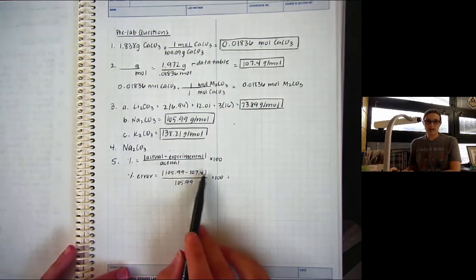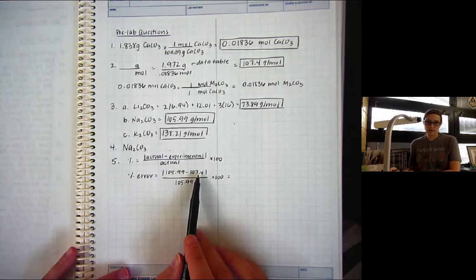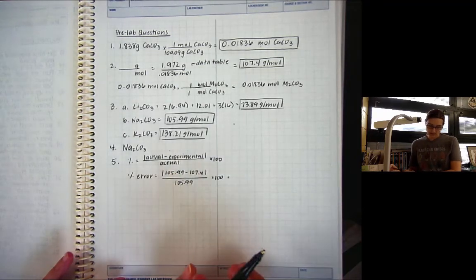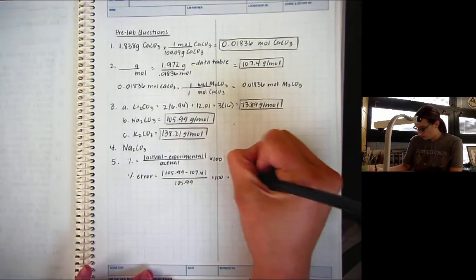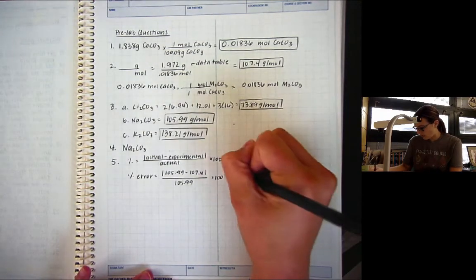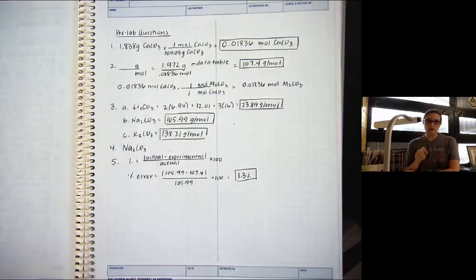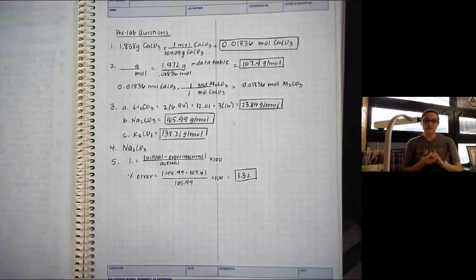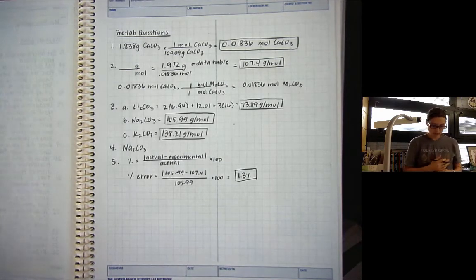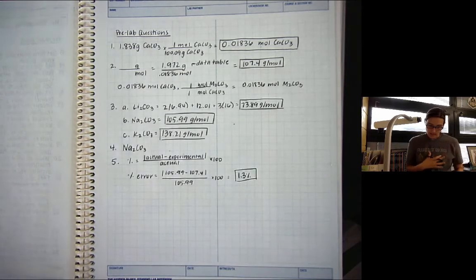So, when you subtract these first, just make it positive. Divide by 105.99 and then multiply by 100. You should get a 1.3 percent error. And make sure you're doing that in your calculator and you're getting the same thing. So, a 1.3 percent error is very, very good. That means we were very close to what we were supposed to get.